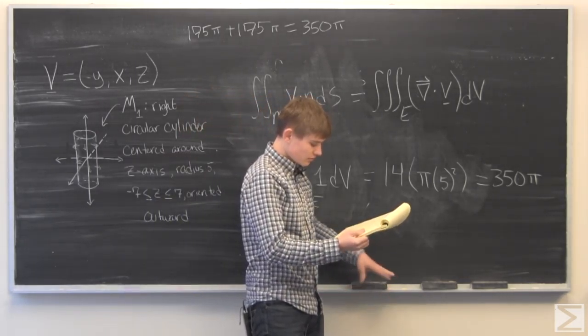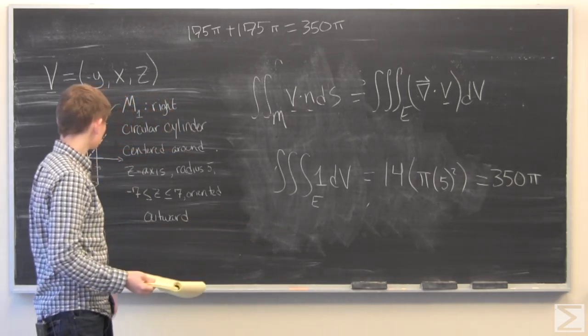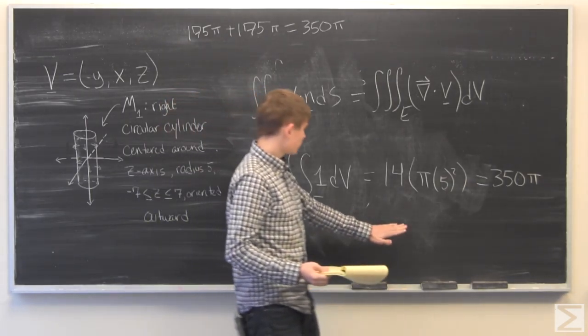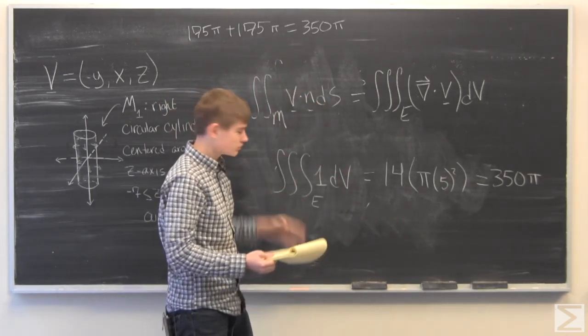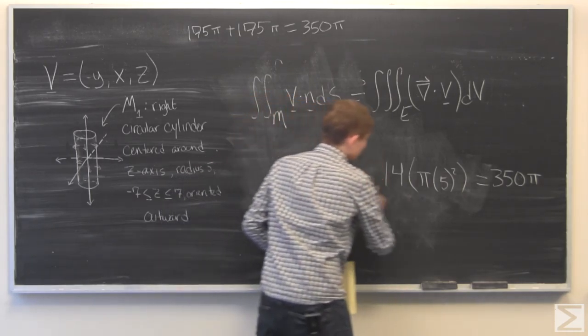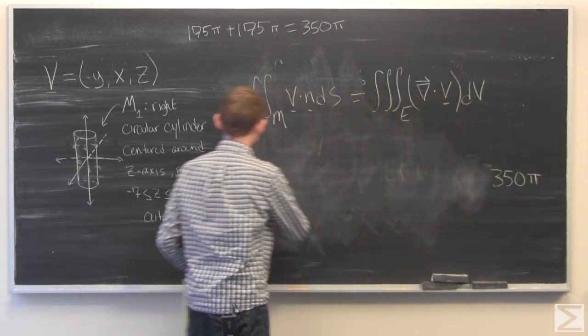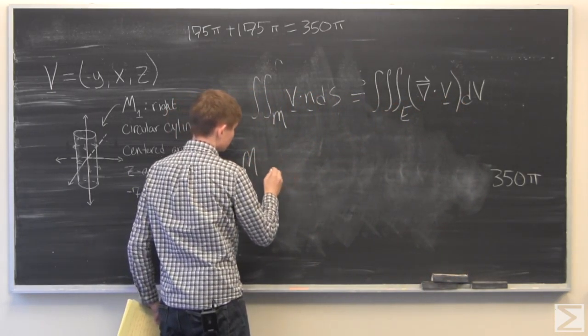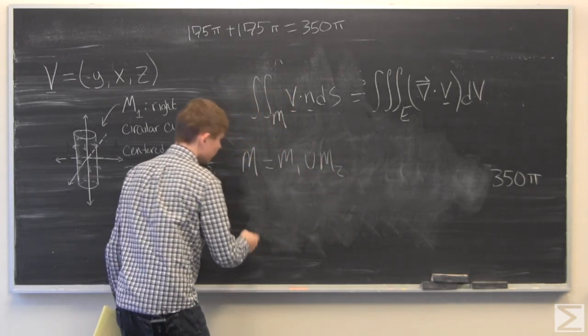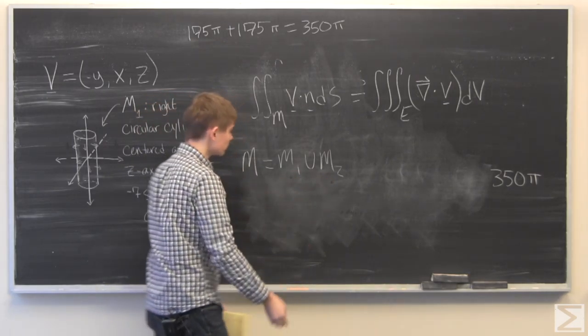And finally, for part D, we are asked to calculate the flux through M1 with our results for the flux of M2. And since M is the union of, so we have M is the union of M1 and M2.